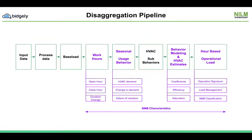A few SMB site-related key characteristics are derived in the process, like opening hour, closing hour, any change in schedule, and demand of HVAC with any striking variations. The regression coefficients indicate efficiency of HVAC usage, while the operational load signature helps in classifying the SMBs.